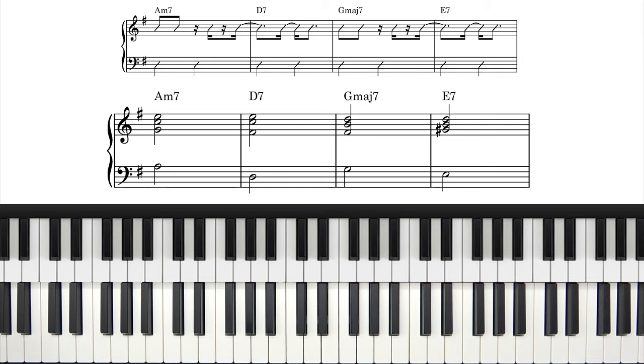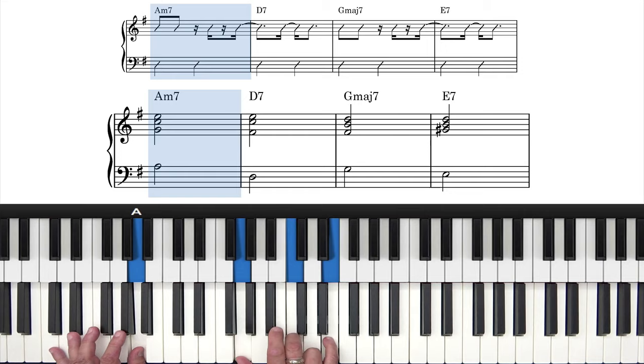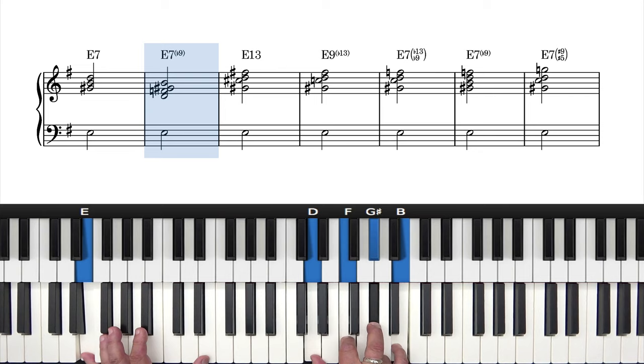Now if we add a six chord to create a two-five-one-six progression, there would be E7. In this case it means a flat nine, but it could also use a thirteenth.